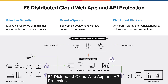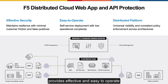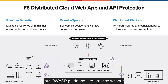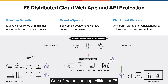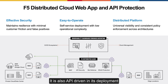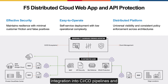F5 Distributed Cloud Web App and API Protection provides effective and easy-to-operate security in a cloud-delivered as-a-service platform, and integrates web application firewall, API security, bot defense, and DDoS protection to help you put OWASP guidance into practice without the operational complexity of managing several disparate solutions. One of the unique capabilities of F5 Distributed Cloud is its ability to provide consistent policy enforcement across clouds and architectures, which will help considerably against security misconfiguration. It is also API-driven in its deployment and operation, providing easy integration into CI/CD pipelines and broader security ecosystems such as event management systems.